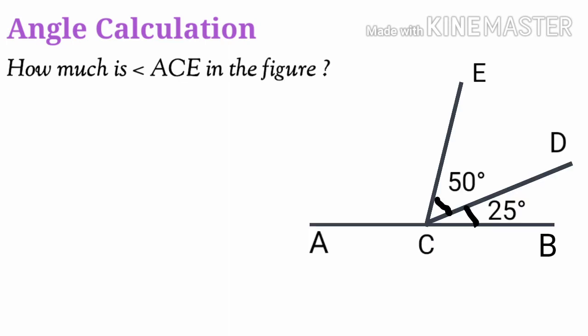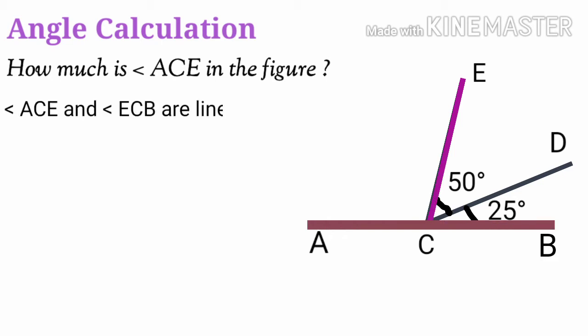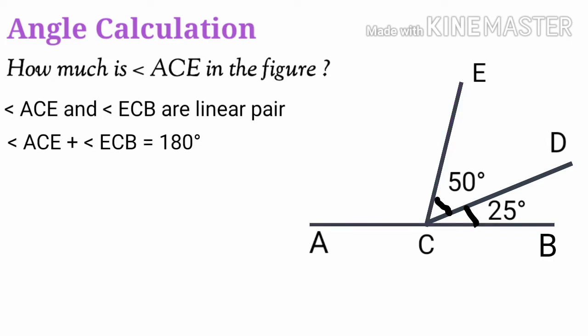Angle calculation. How much is angle ACE in the figure? We know EC is a line drawn to line AB. Therefore angle ACE and angle ECB are in a linear pair, so angle ACE plus angle ECB is equal to 180 degrees.